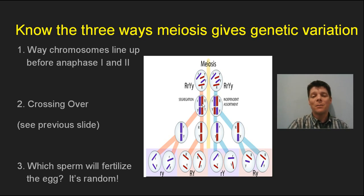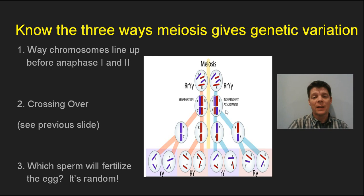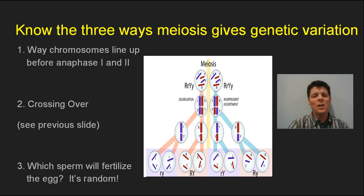This model shows only two different chromosomes, but remember there are two copies of each chromosome type. In a real human cell we'd have to show 23 sets of chromosomes, so the number of different ways those chromosomes could line up in metaphase one is just a huge, huge number. This leads to all kinds of genetic variation — it's why siblings who aren't identical twins are not genetically the same.